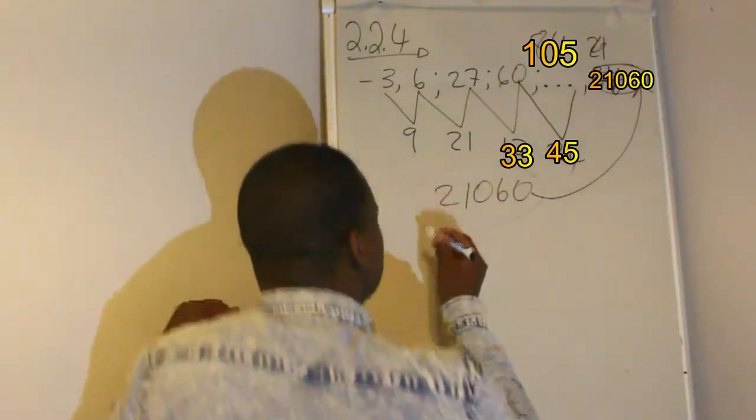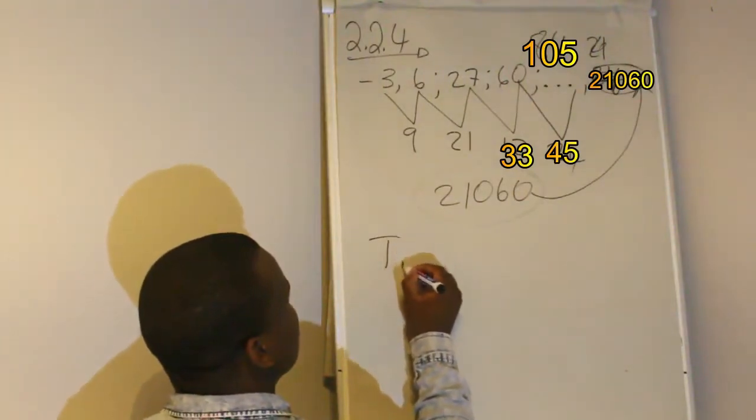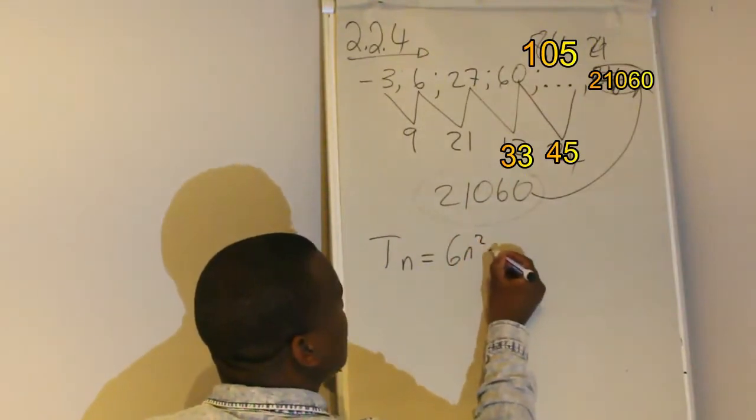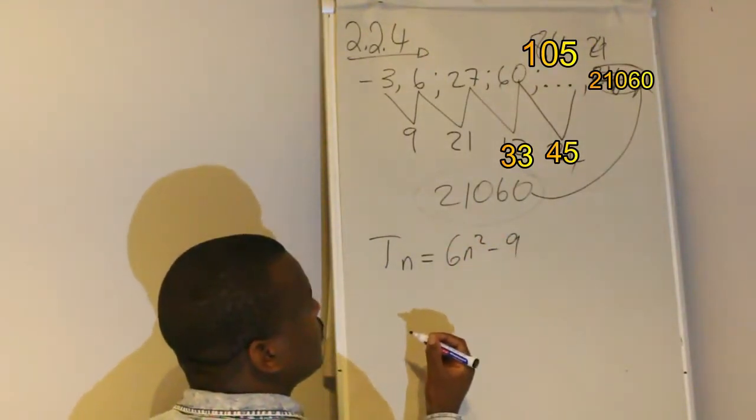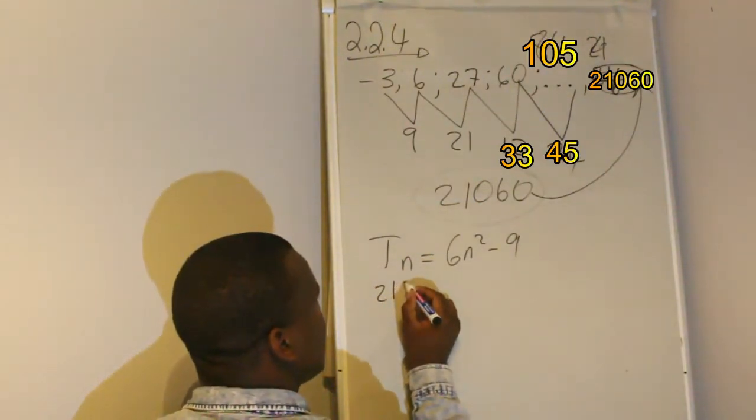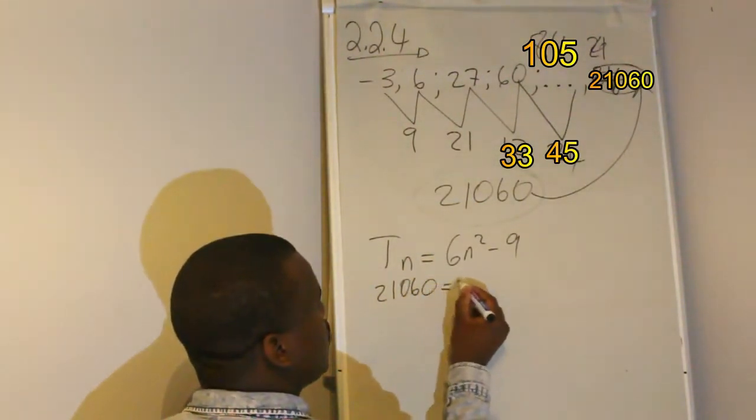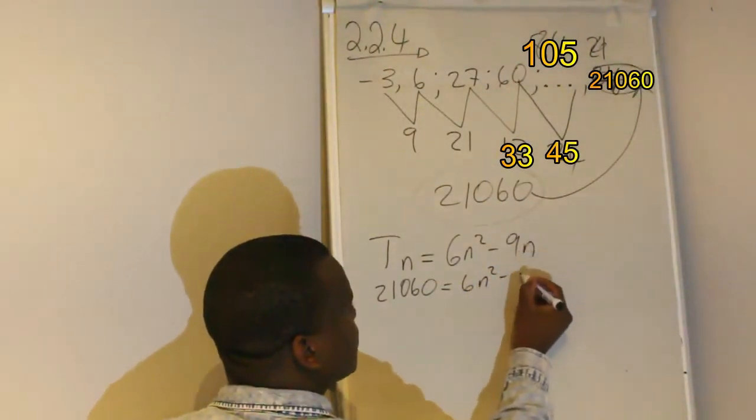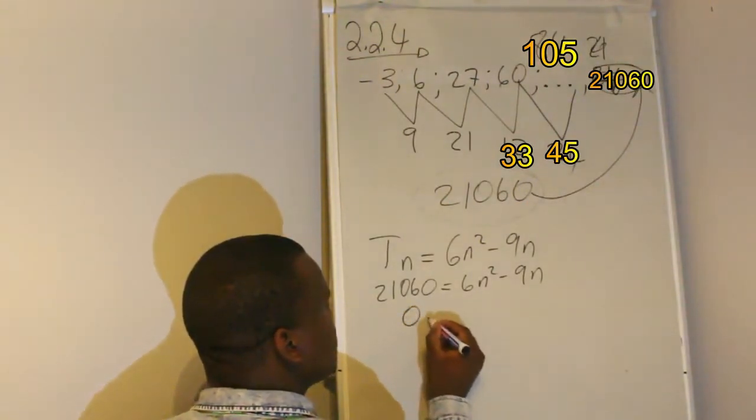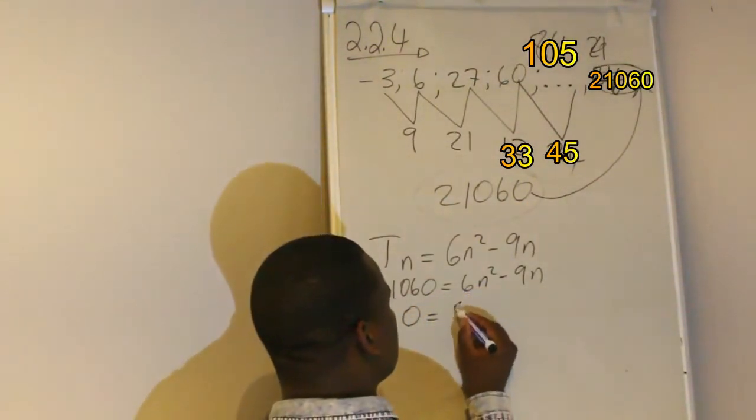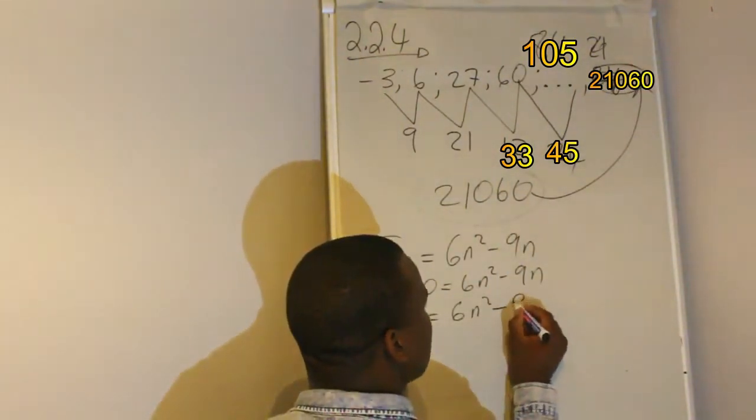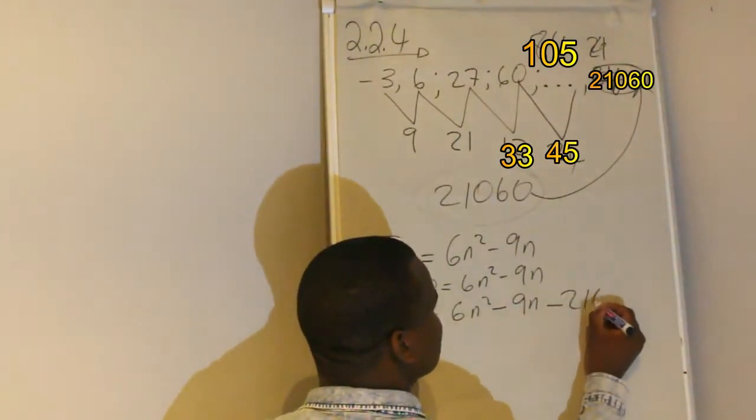Now so the general formula for this, Tm, is equal to 6m squared minus 9m. So now you have that this is 21,060, which is equal to 6m squared minus 9m.